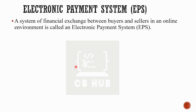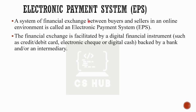Electronic Payment System, or EPS, is the system of financial exchange between buyer and seller in the online environment. For example, when we use an e-commerce website like Amazon, we select a product, and there is a financial exchange between the buyer and the seller — that environment is the electronic payment system.